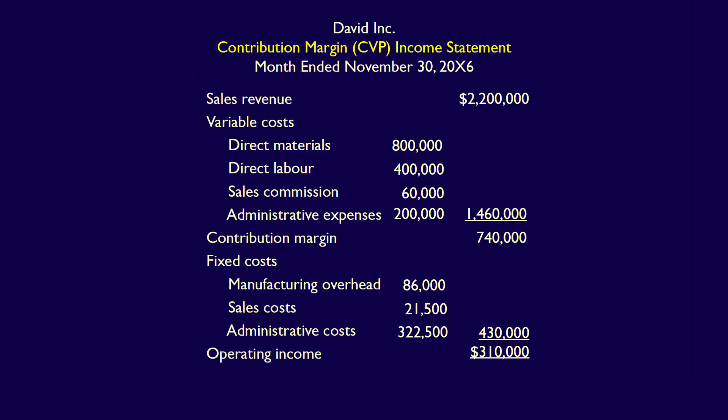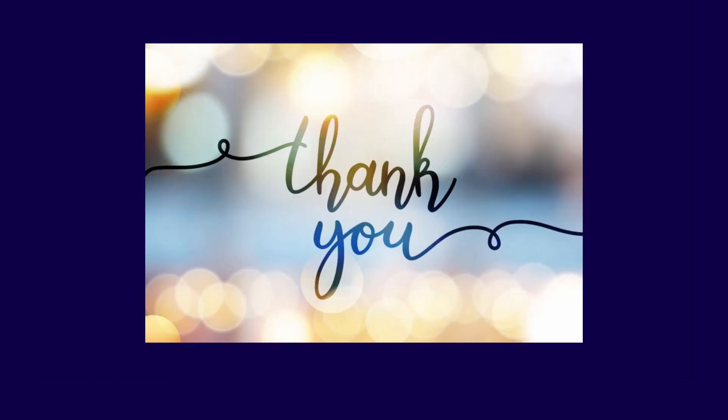The contribution margin income statement is the one most commonly used in managerial accounting, and we will continue to use it moving forward. It's critical that you gain a firm understanding of the format of a contribution margin income statement, also called a CVP income statement. This, of course, requires practice. Thanks so much for watching.